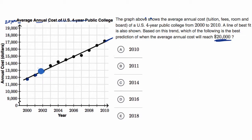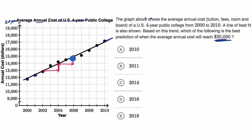Or you could look at the slope of the line and ask: every year, how much does tuition go up? It looks like for every two years that go by, the line predicts a $1,000 increase in tuition. So roughly every two years that pass, tuition goes up by $1,000.